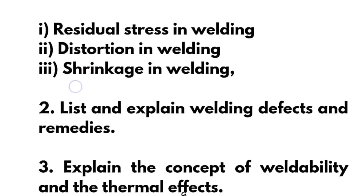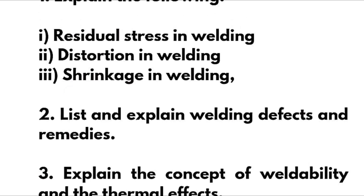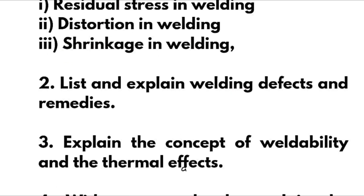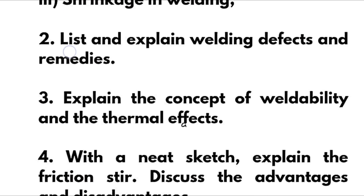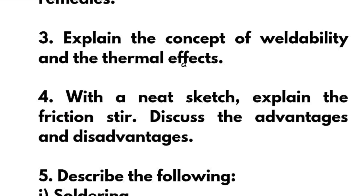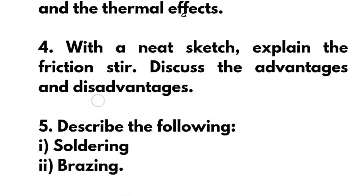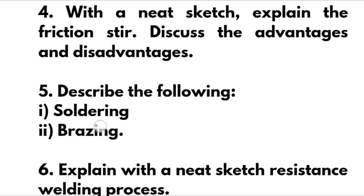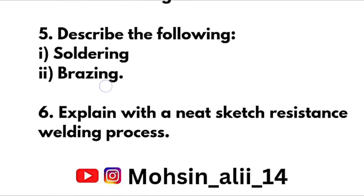In Module 5, we have: explain residual stress in welding, distortion in welding, and shrinkage in welding; list and explain welding defects and remedies; explain the concept of weldability and the thermal effects; explain friction stir welding with a neat sketch and discuss its advantages and disadvantages; describe soldering and brazing; and explain resistance welding processes with a neat sketch.